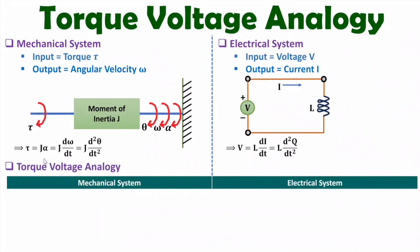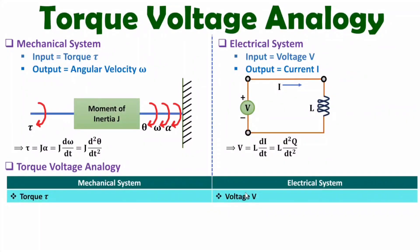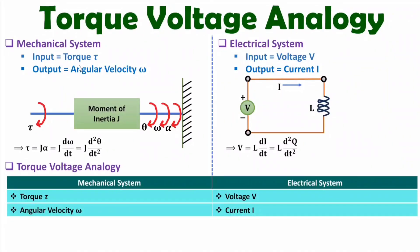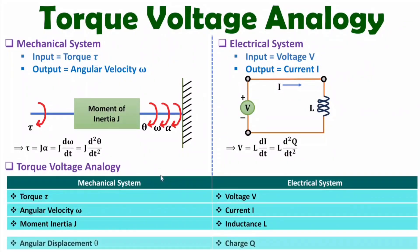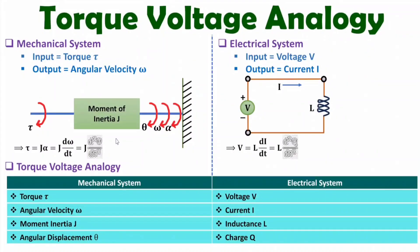With the mechanical system, input is torque, and with the electrical system, input is voltage. With the mechanical system, output is angular velocity, and with the electrical system, output is current. Observing the two differential equations, with single differentiation with respect to time we have d(omega)/dt, which means omega is equivalent to current I. Moment of inertia J is equivalent to inductance L. Since angular displacement theta appears in the double differentiation, and charge q appears in the double differentiation on the electrical side, angular displacement theta is equivalent to charge q.